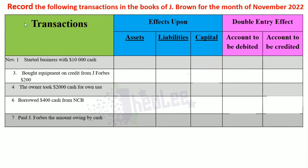For this question, you're required to record the following transactions in the books of J. Brown for the month of November 2022. You're provided with the owner's name — you could have been given the name of the business.